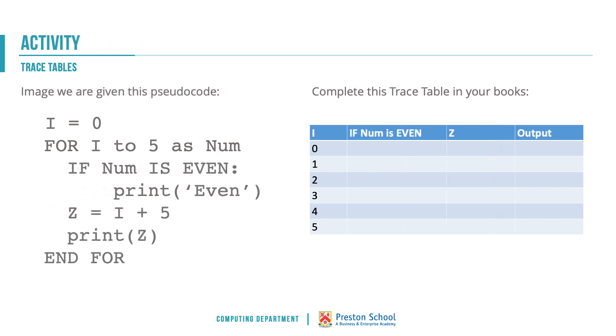A slightly tougher example here: i equals 0, for i to 5 as num, if num is even, print even, z equals i plus 5, print z, end for. We've got a couple of columns there. We've got if num is even, and that's going to be a true or false value, is that true or not or should it be returning true or false, z and then what's going to be output. Maybe in certain columns you are going to have more than one output. Pause the video at this point and give that trace table a go.